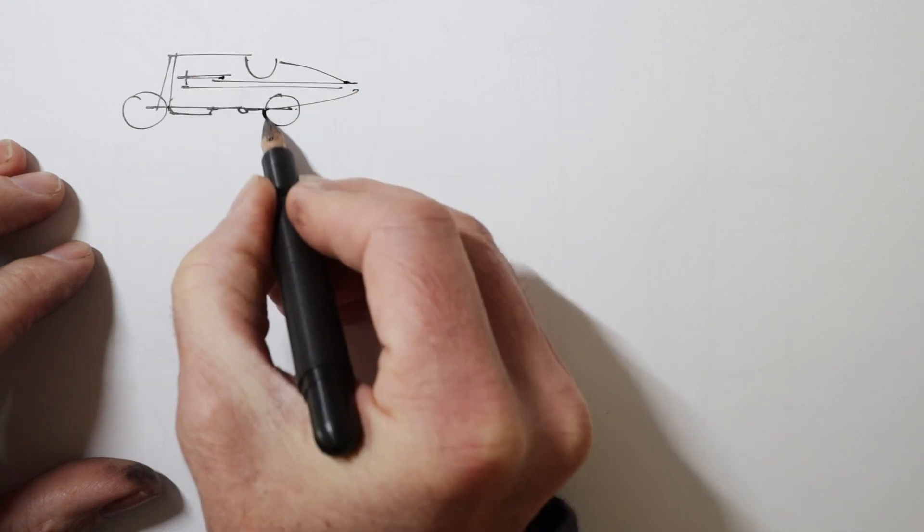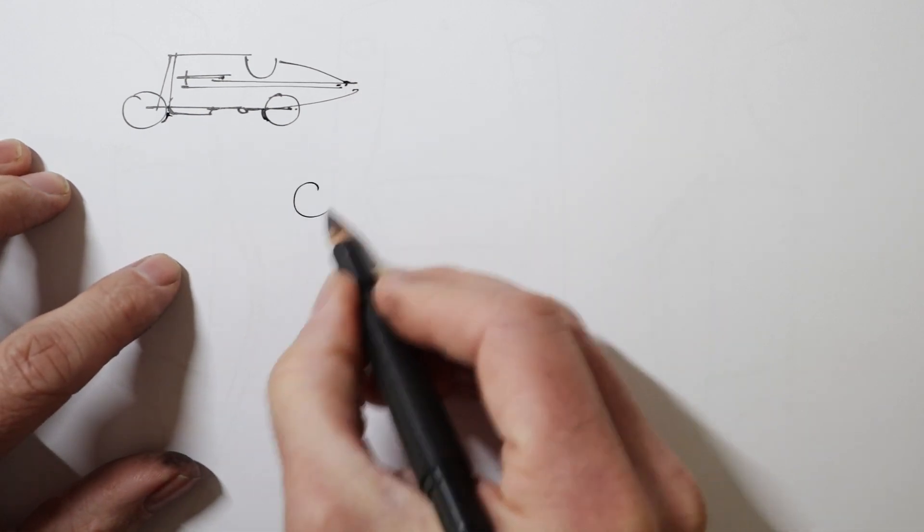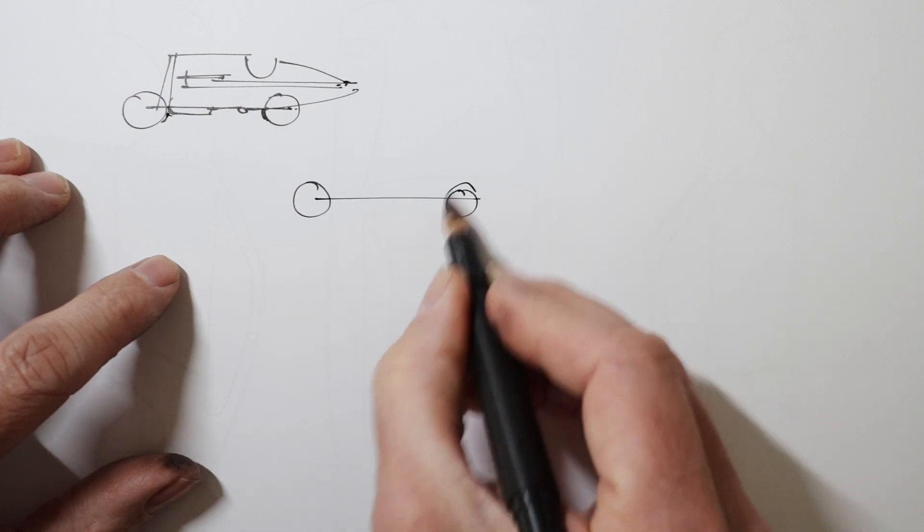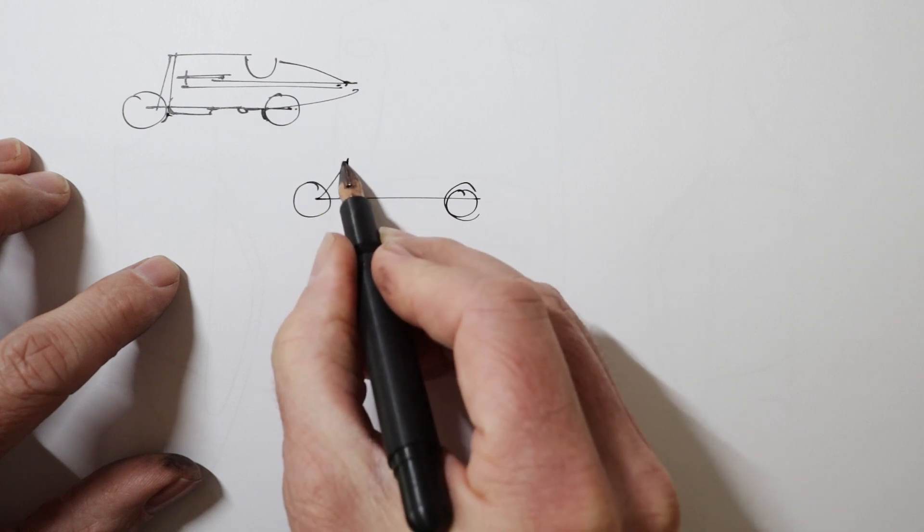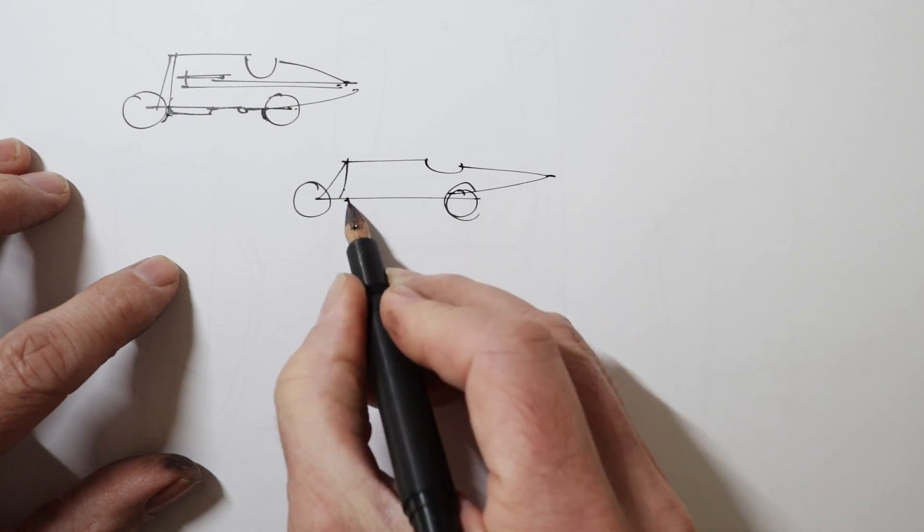So here I'm doing vintage cars. As you can see, the first car I drew there took about 30 seconds, and I'm just thinking about the basic proportions really. I'm just putting two circles down for the wheels, deciding on the wheelbase length.